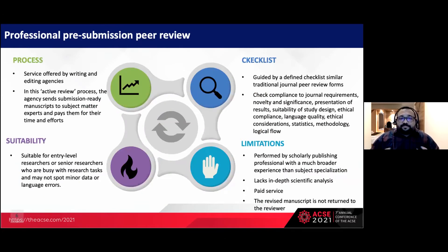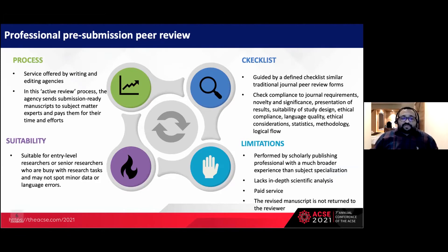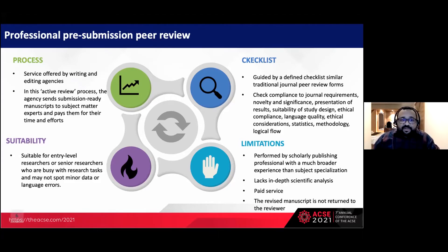Professional pre-submission peer review is not practiced very widely globally, though many researchers from the Asia-Pacific, especially from China and Korea, are utilizing it. Entry-level or senior researchers who are busy and get saturated with a paper may not spot minor data or language errors, so they use this service. It is offered by writing or editing agencies, which send a submission-ready manuscript to a subject matter expert and pay them. The review uses a checklist that mimics or exceeds the journal's peer review checklist, covering compliance with journal requirements, novelty, significance, results presentation, study design, methodology, statistics, and logical flow.